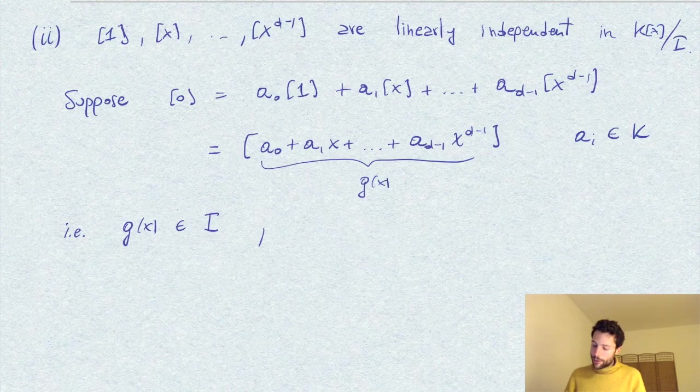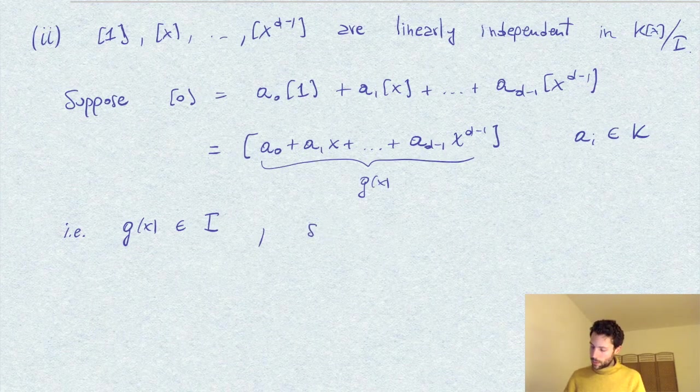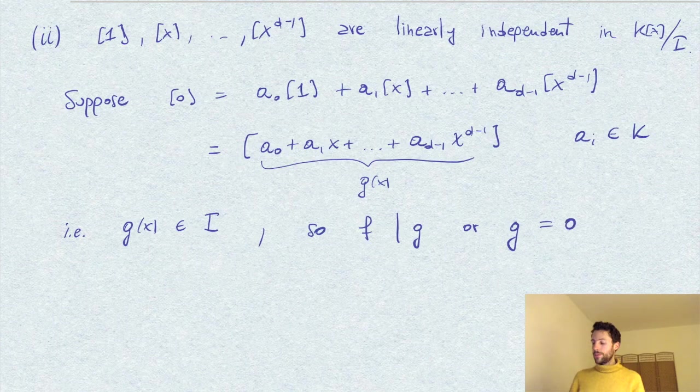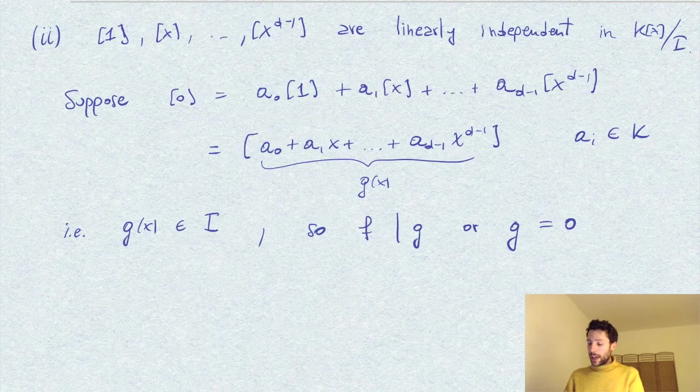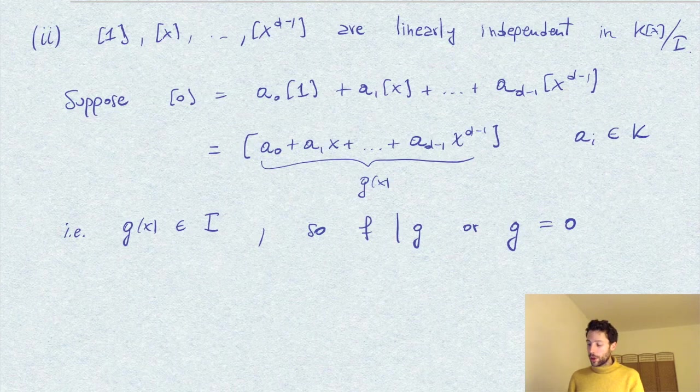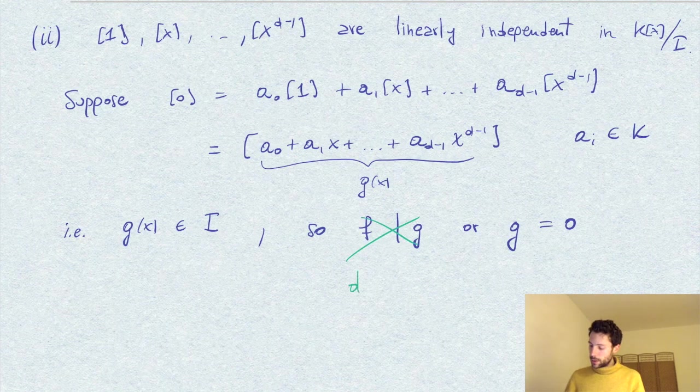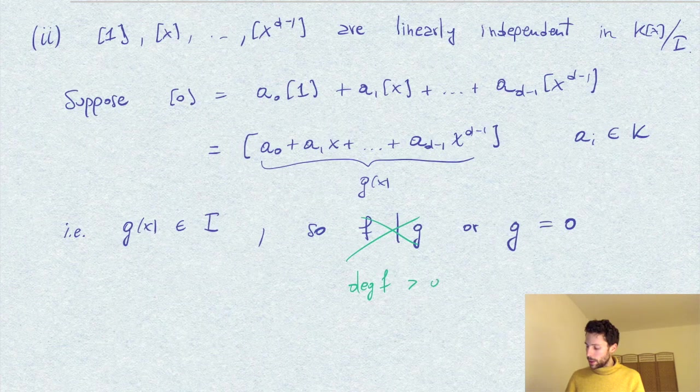Therefore, f divides g, or g is itself the 0 polynomial. But f has degree d and g is a polynomial of degree at most d-1, so f dividing g is not possible since the degree of f is strictly bigger than the degree of g.